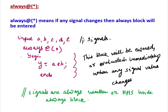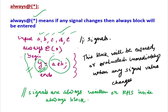Always @(*) means if any signal changes, the always block will be entered and evaluated. For example, if we have five signals and write always @(*) with Y = A & B, then if any signal changes — A, B, C, D, or E — this always block will be executed and we will get the output Y. The signals written on the right-hand side inside the always block are automatically included in the sensitivity list.